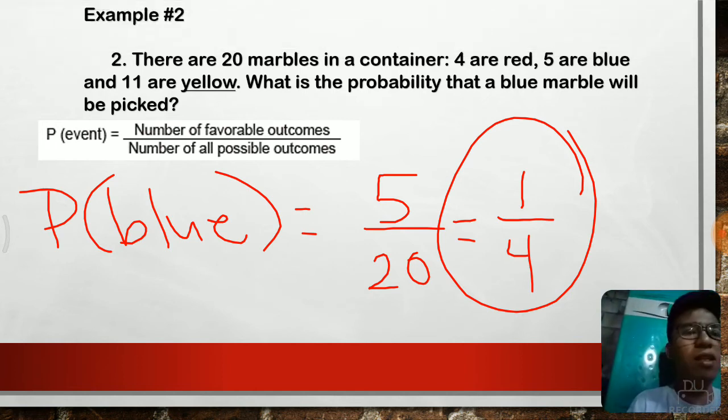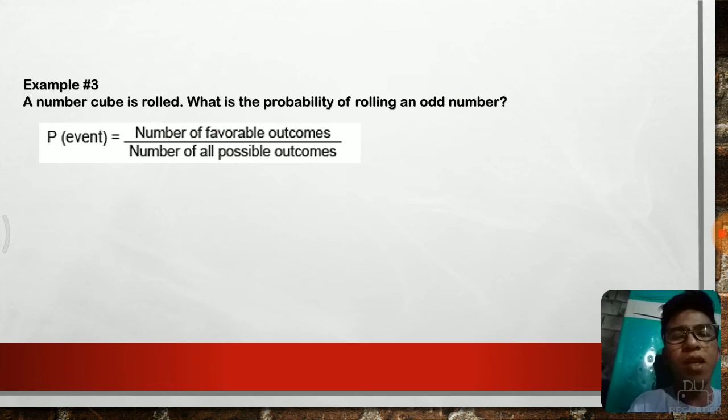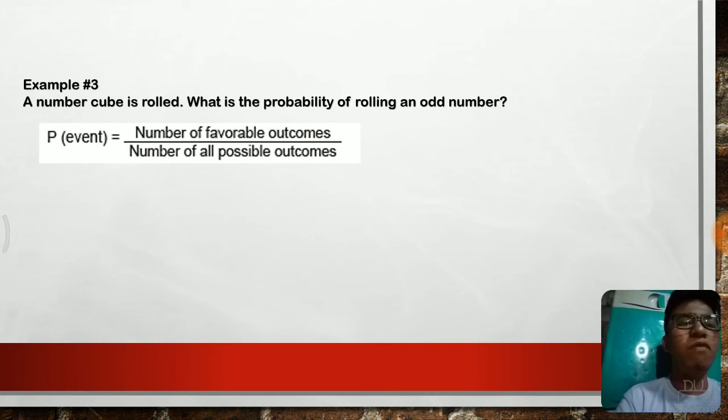Let's proceed with the third example. Example number 3: A number cube is rolled. What is the probability of rolling an odd number? In this problem, our experiment is we roll a cube. And a cube has 6 faces.